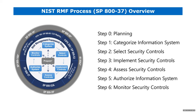With respect to the RMF process, there is a document called NIST 800-37. I highly recommend everyone read it at a high level to understand the different steps and how they are interconnected — starting with the Prepare step as step zero, then Categorize, Select, and so on through step six.